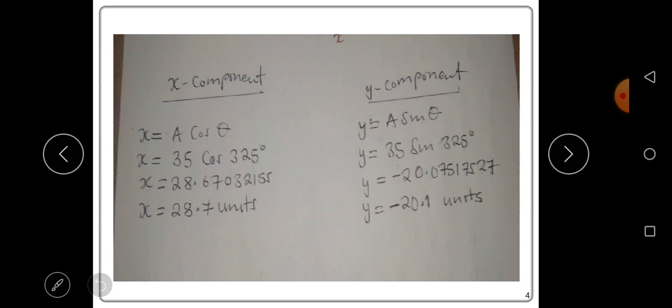A is the magnitude, which is 35, and θ is the angle, which is 325 degrees. When you punch this into a calculator, you find that the y-component is negative 20.075.